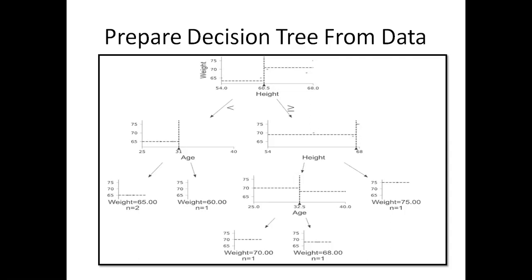The first node is the root node and you get the leaf nodes. In the leaf nodes, you get the values: weight equal to 65.0, weight equal to 60.0, weight equal to 70.0, weight equal to 68.0, weight equal to 75.0. When preparing the decision tree from the training dataset, it is clear it is a non-parametric method. At each node we ask a question and as per the answer we split the data, drawing horizontal and vertical lines which are the decision boundaries.